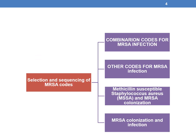Regarding MRSA coding, there are 4 guidelines related to the selection and sequencing of MRSA codes. They are: combination codes for MRSA infection, other codes for MRSA infection, Methicillin-susceptible Staphylococcus aureus (MSSA) and MRSA colonization, and finally MRSA colonization and infection.